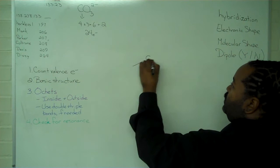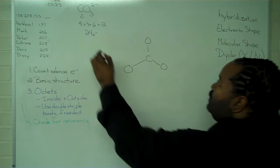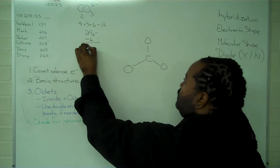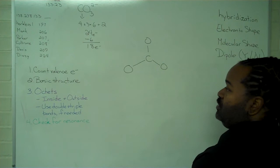In the second step, we write out the basic structure, which means we're going to have the carbon atom in the middle, and that will be attached to 3 oxygens. And this step uses up 6 of my electrons. So 24 minus 6 leaves me with a total of 18 electrons.